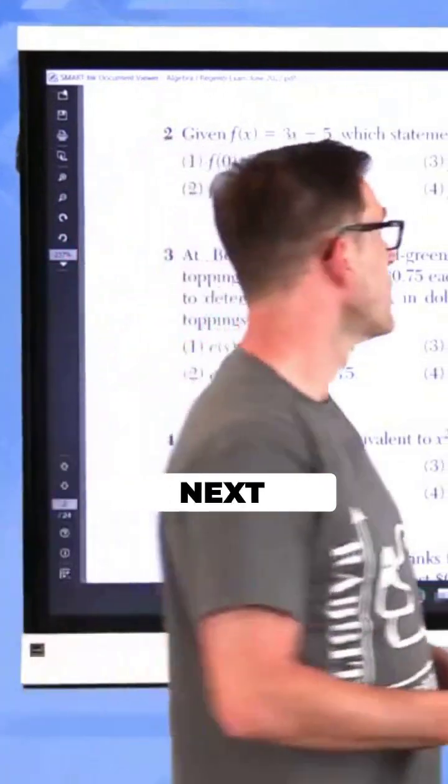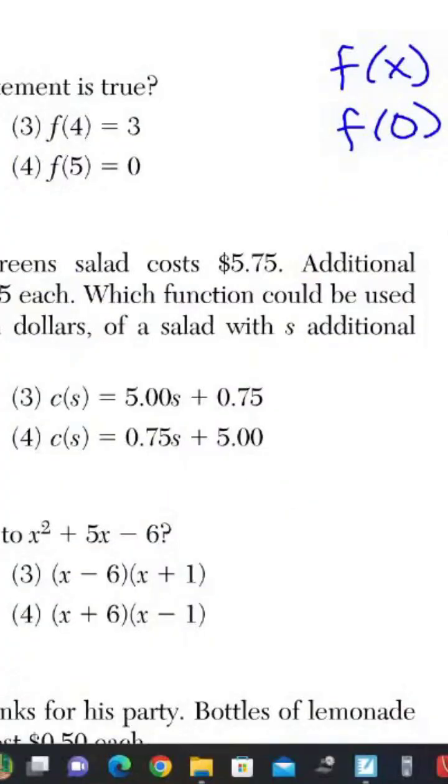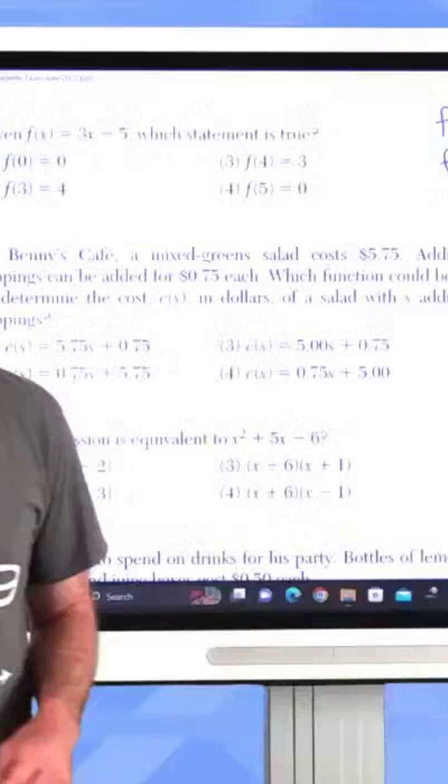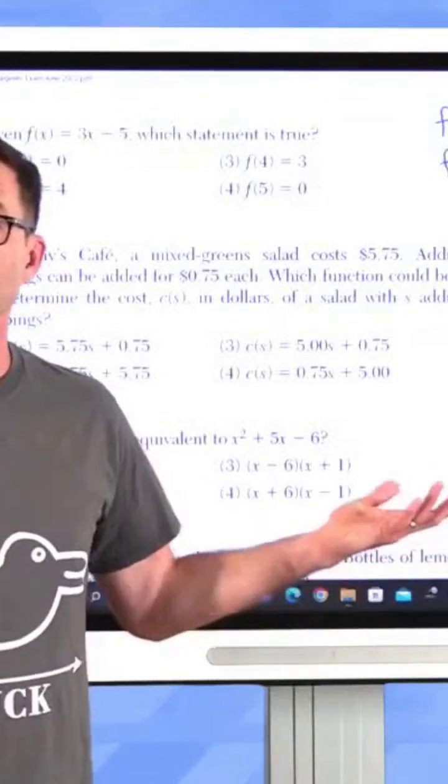So I try my next one. Let's try f of 3. Well, f of 3, again, same thing, is going to be 3 times 3 minus 5. And that's going to be 9 minus 5 and 9 minus 5 is 4. So f of 3 is equal to 4. And that's my winner, right?